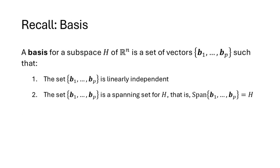Let's start by recalling the definition of basis from the previous lecture. When we have a subspace H of R^n, a basis is a set of vectors b1 through bp that has two properties: the set is linearly independent, and the set is a spanning set for H — in other words, when we form the span of the b vectors we get H.